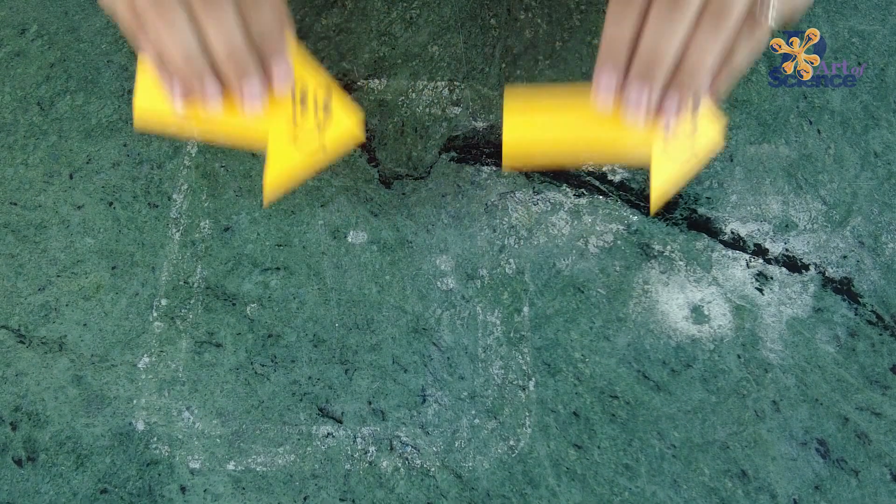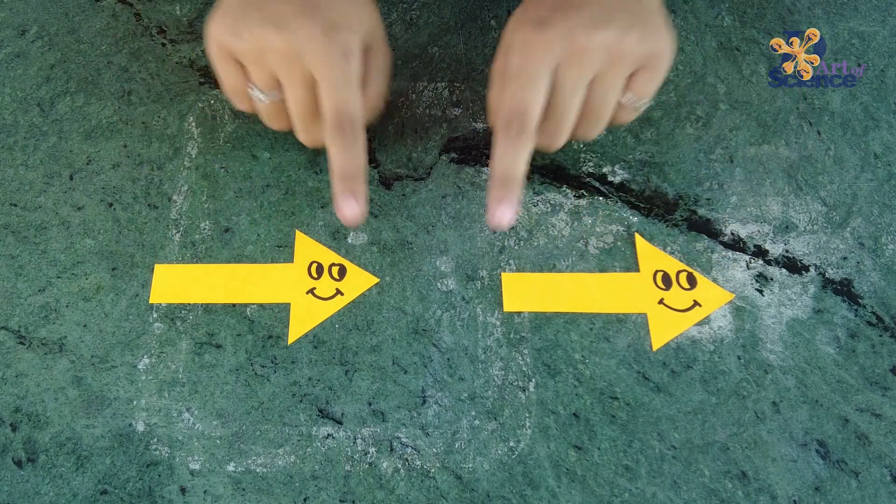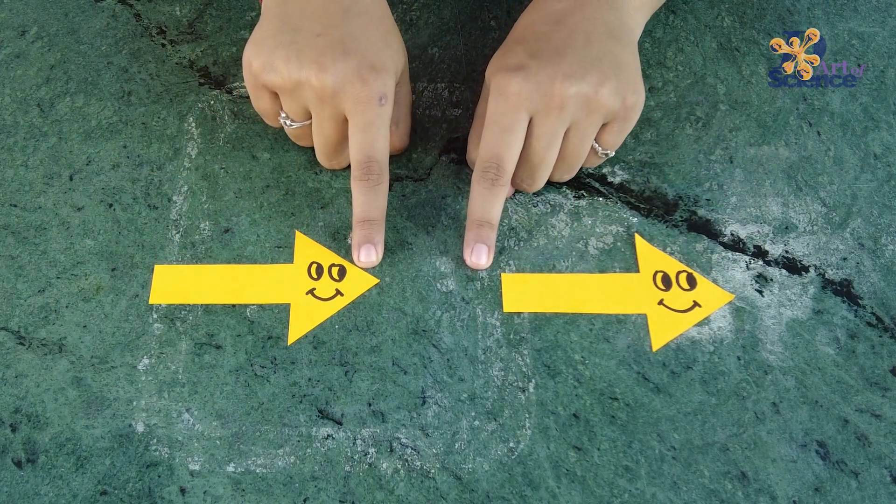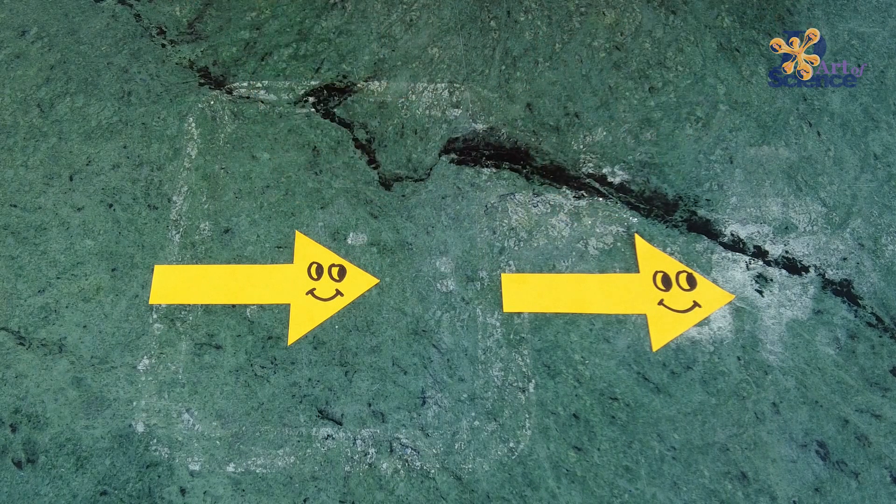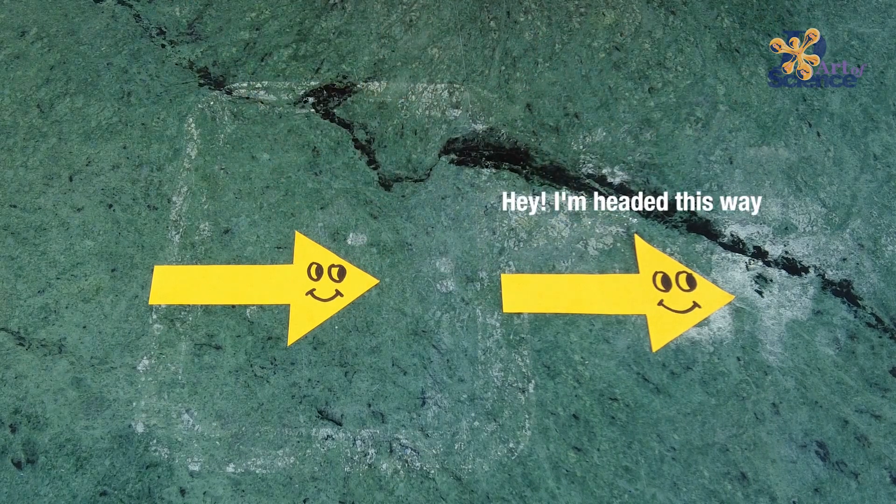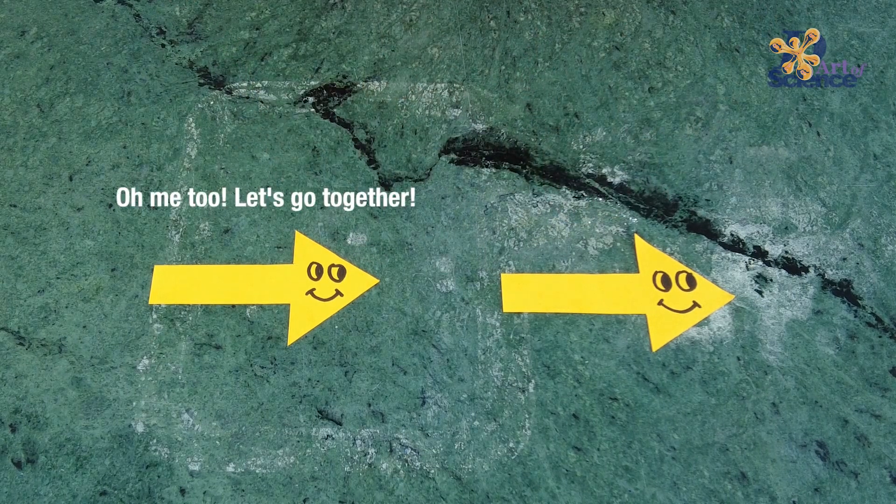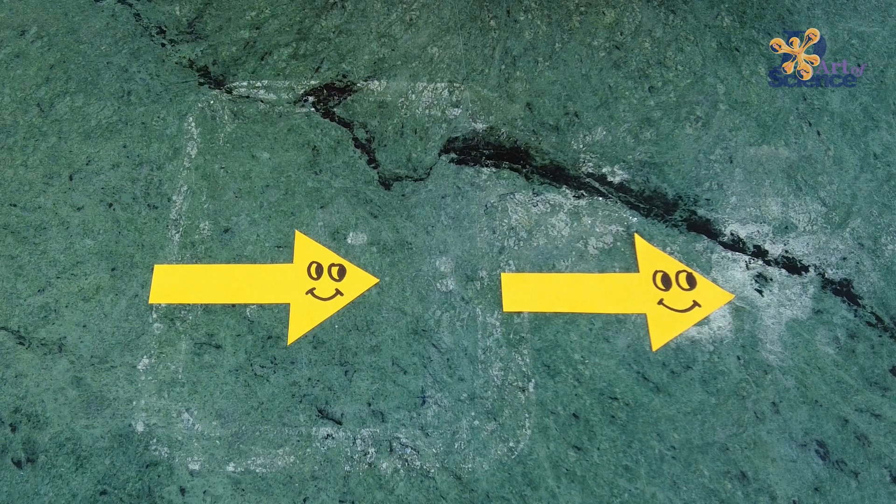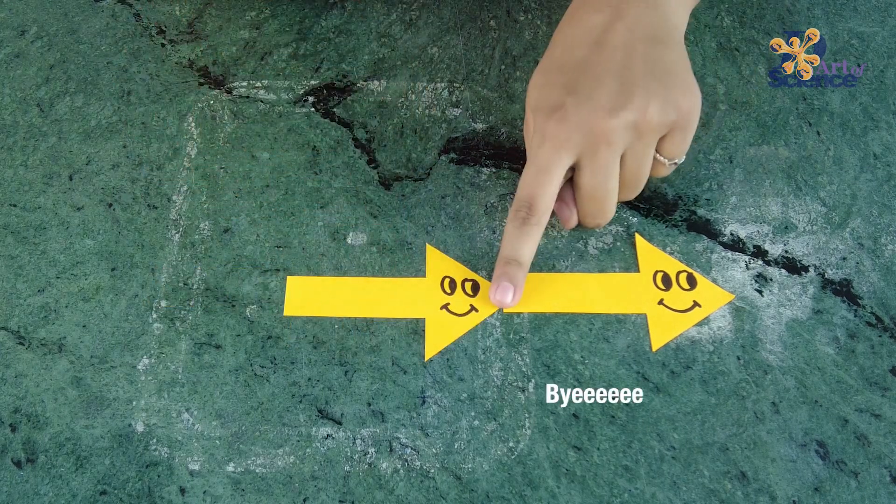However, in case of two magnets with their unlike poles aligned against each other, something like this happens. Hey, I'm headed this way. Oh, me too! Let's go together! Bye!